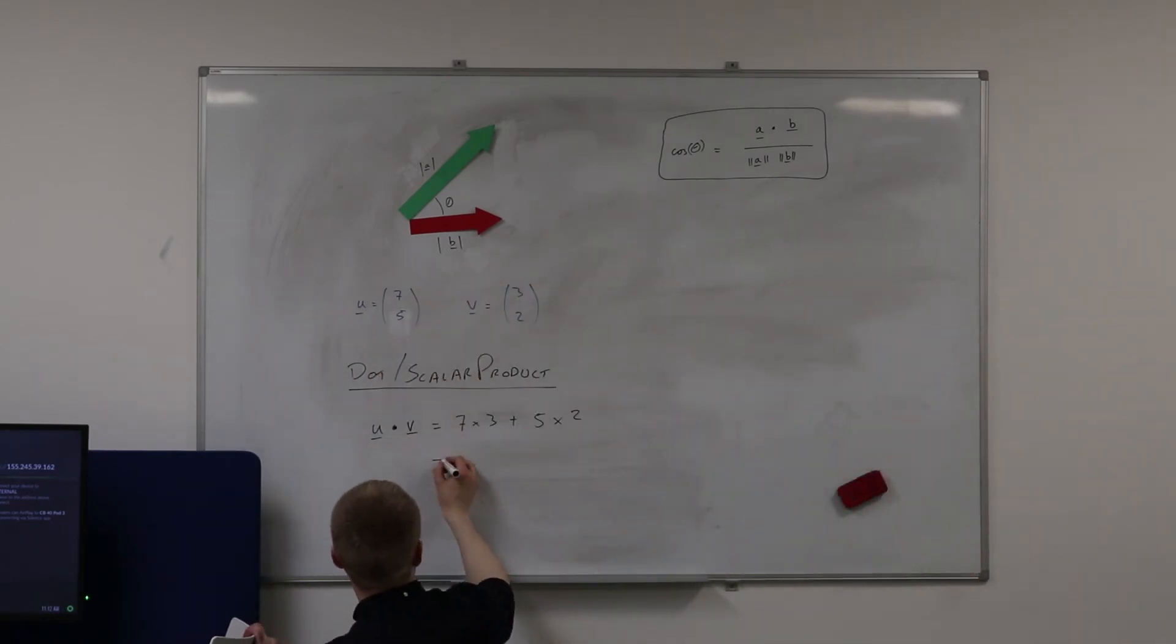So let's just do a bit of simplification. 7 times 3 is 21. 5 times 2 is 10. If I add them together, the answer is 31.